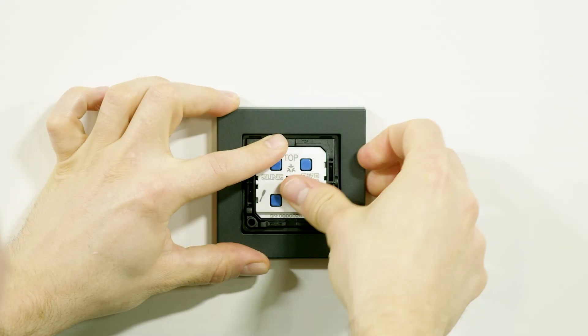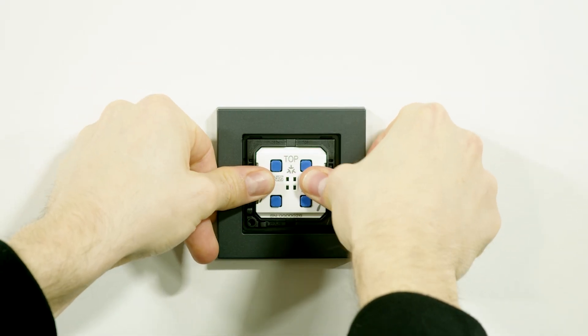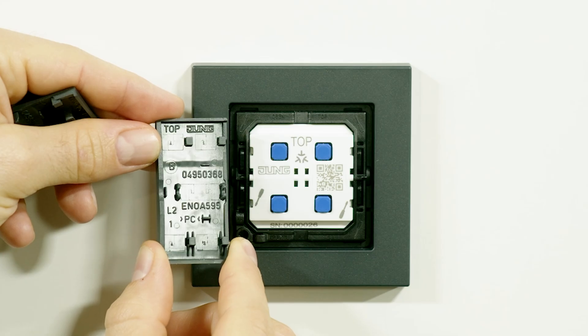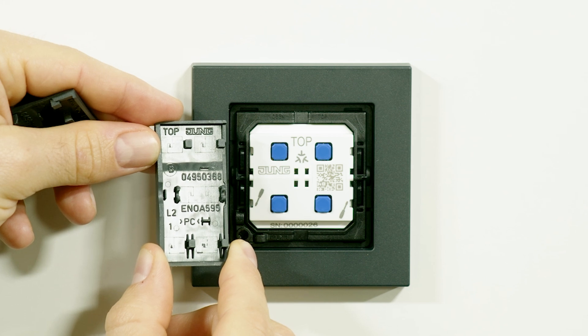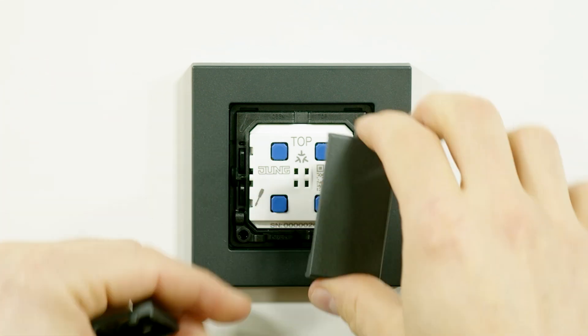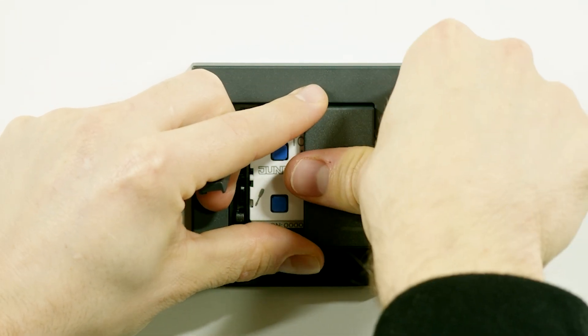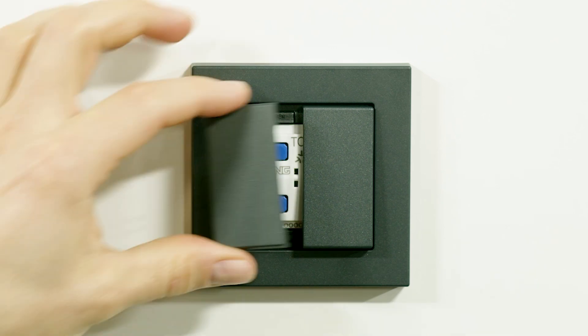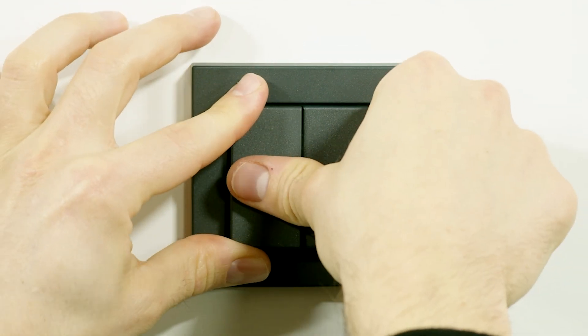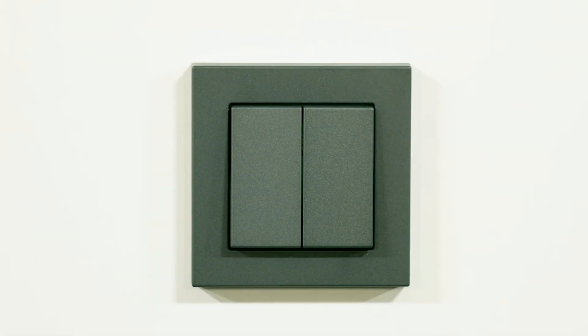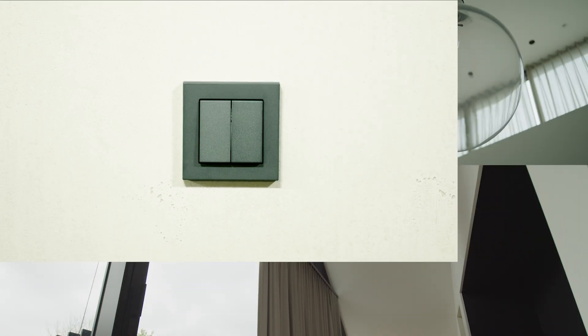Insert the radio module back into the mounting ring. Ensure that the module and the rockers are aligned with the top marking facing upwards. Your META push button is now back in its intended use.